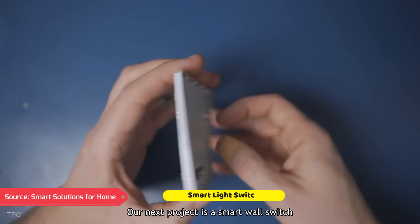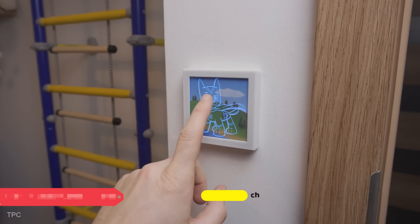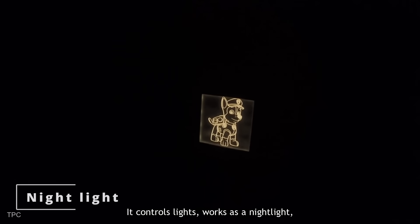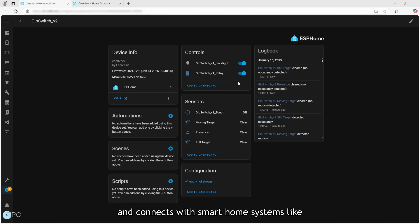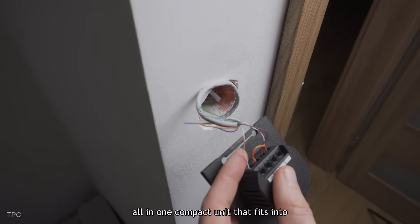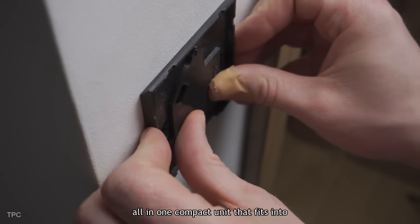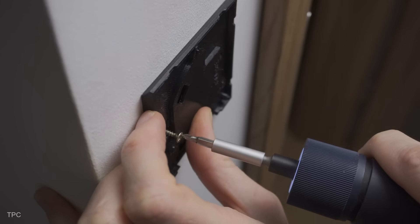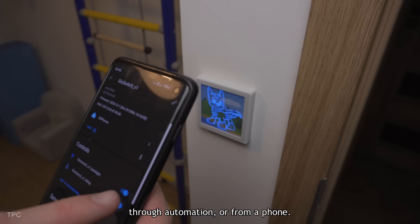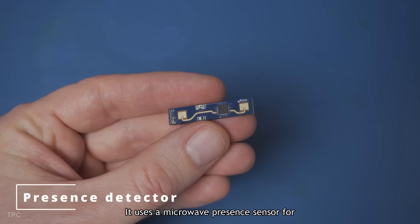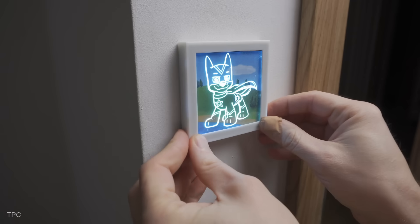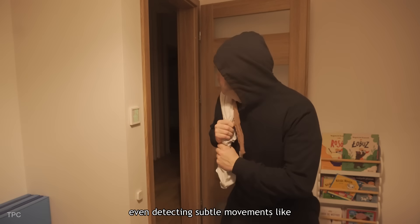Number 9. Our next project is a smart wall switch with added features. It controls lights, works as a nightlight, simulates sunrise, detects presence, and connects with smart home systems like Home Assistant – all in one compact unit that fits into standard wall boxes. The switch can be controlled manually, through automation, or from a phone. It uses a microwave presence sensor for motion detection, which is more sensitive than traditional PIR sensors, even detecting subtle movements like breathing.